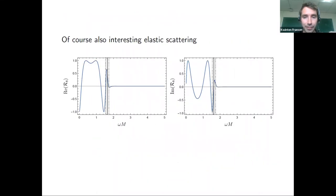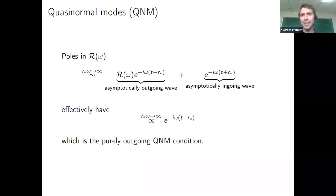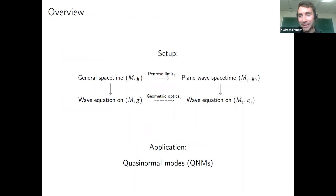There's also interesting elastic scattering which you could understand via null geodesics, but I'll focus instead on quasi-normal modes. In the wave-scattering problem, quasi-normal modes correspond to poles in the frequency plane — effectively you get just an outgoing wave: the quasi-normal mode condition is free excitations of the black hole going into the horizon and out to infinity.